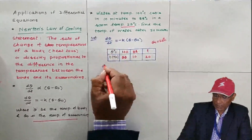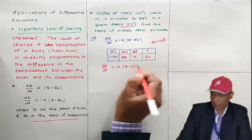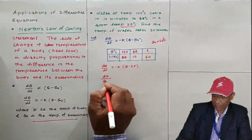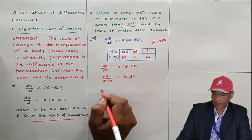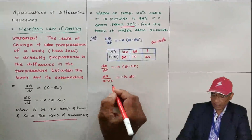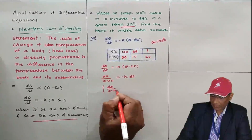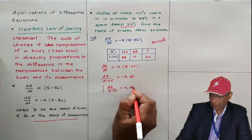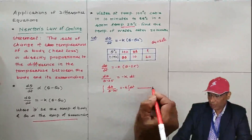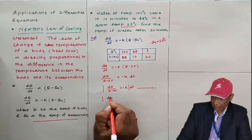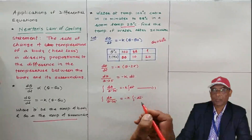Now, dθ/dt equals −k(θ − 25), since 25 is the room temperature. I am separating variables — shifting θ to the left-hand side and t to the right-hand side. Once you separate θ and t, integrate: dθ/(θ − 25) = −k dt. Integrating both sides, with k kept outside as a constant, we get log(θ − 25) on the left and −kt on the right.